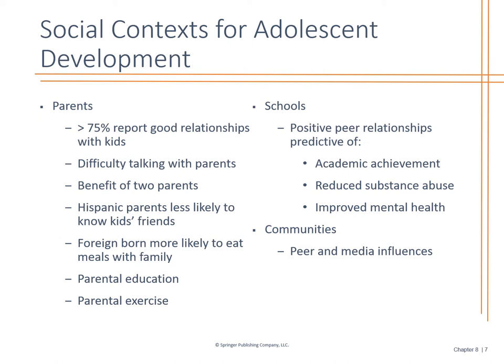Regarding social context: for the most part, parents have a good relationship with their children, but there may be some difficulty in how parents interact with them. There can be a benefit with two parents in the home, and challenges when there's been a divorce or trauma and only one parent is present. Make sure you discuss with the patient: how are you doing, how is your support system, and how do their parents react with their peers? Do they know where their kids are going, what they're watching on TV, or what they're playing on their phones?